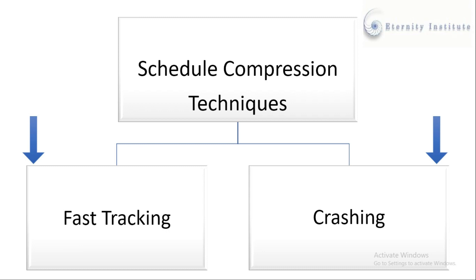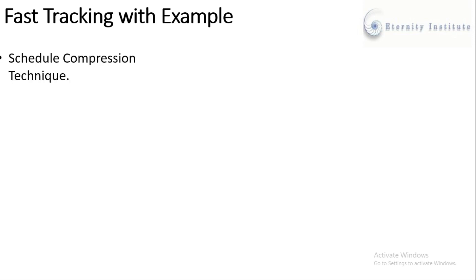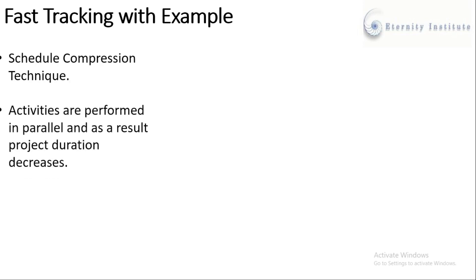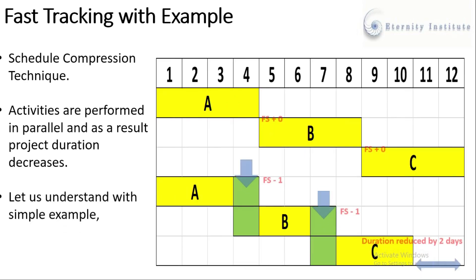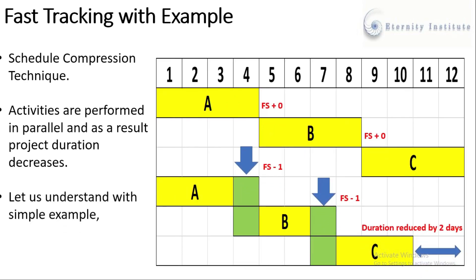Let us understand fast tracking with an example. Fast tracking is a schedule compression technique in which activities are performed in parallel, and as a result the project duration decreases. Let us understand this with a simple example — we have a 12-day project.